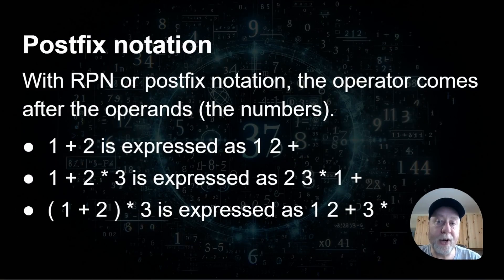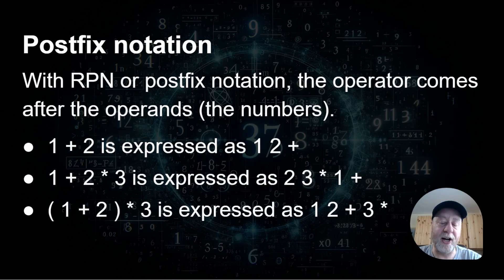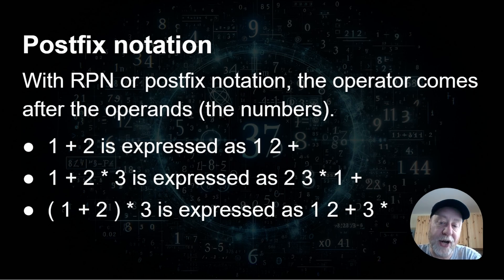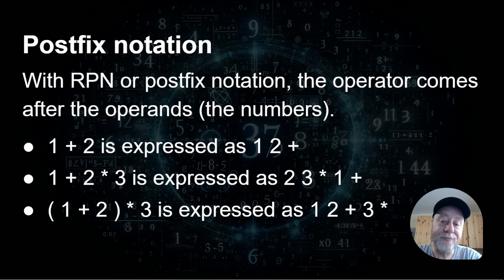Reverse Polish notation is called that because there is a thing called Polish notation, which was invented by a Polish mathematician about 100 years ago. Reverse is the opposite of it. In reverse Polish notation, or postfix notation, the operator is expressed after the operands — that's the numbers. So one plus two becomes one two plus.